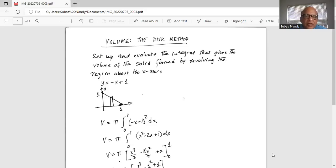The volume by the disk method equals pi times the integral from zero to one of negative x plus one squared dx.